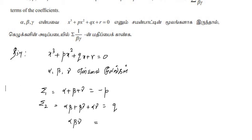Sigma3 is the product of all three roots: alpha·beta·gamma. That is the third relation. Alpha·beta·gamma equals minus r.